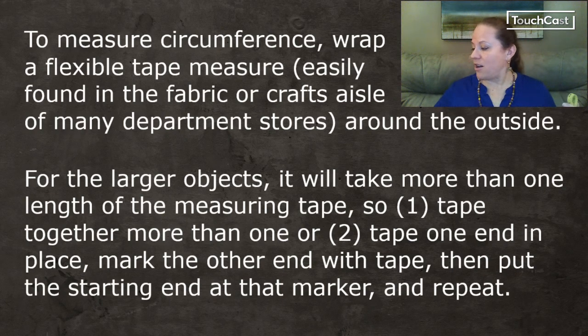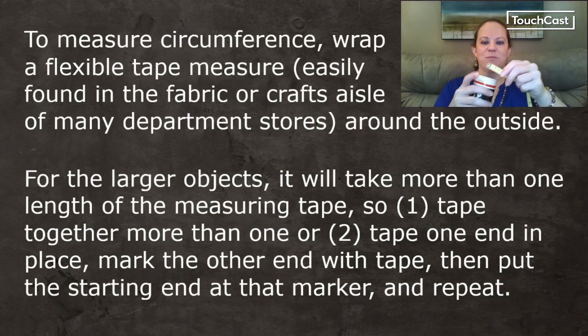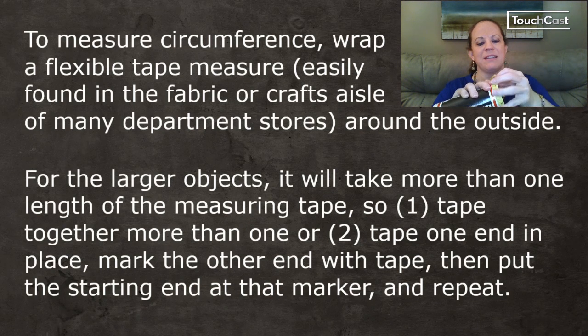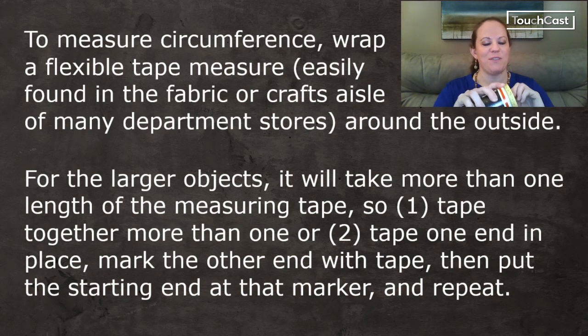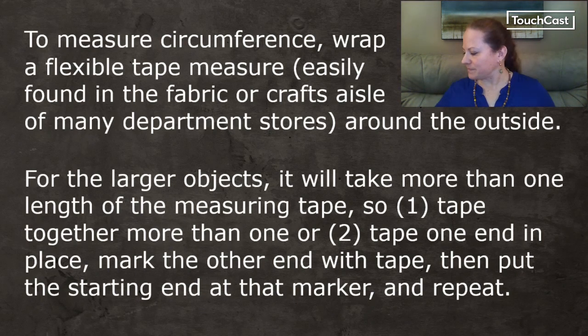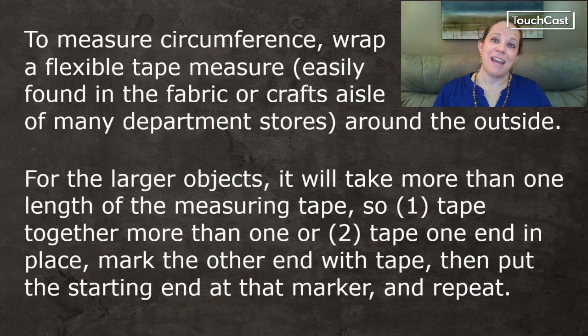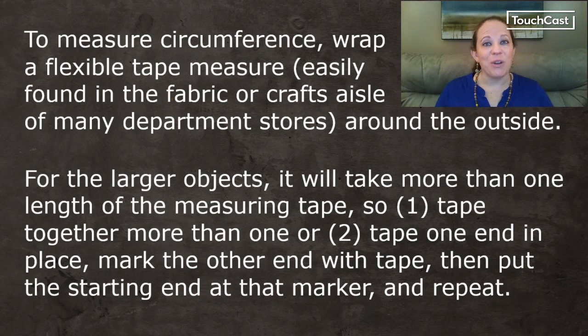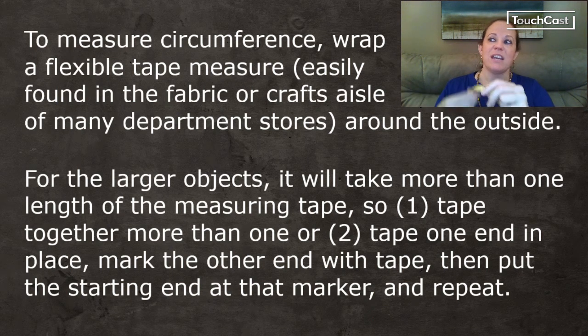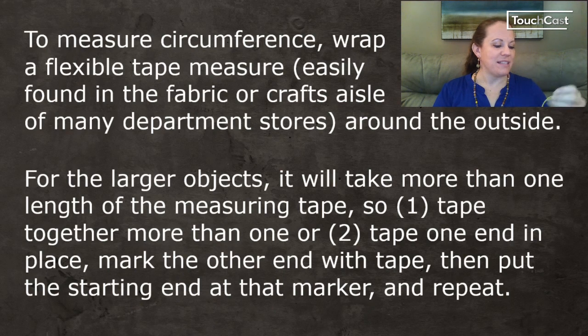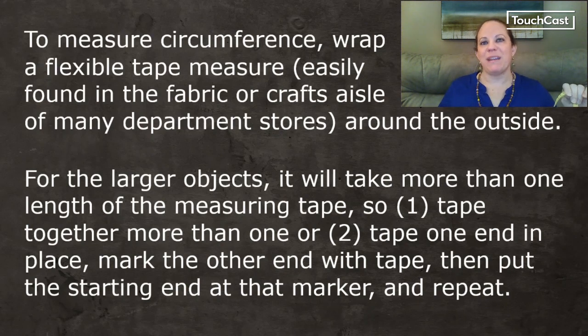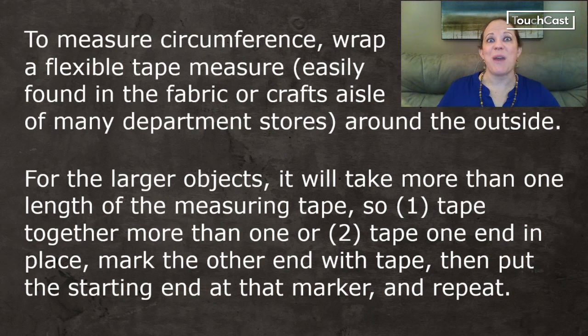And so to measure our circumference, we can pretty easily wrap our measuring tape just around the outside of the object. And of course, since this is a scientific experiment, we should really use the metric system. So we just wrap around the outside. For the larger objects, it's going to take more than one tape to get all the way around. So you can either tape multiple measuring tapes together, or you can tape one end in place, take the tape as far around as it's going to go, and mark where the end of the tape is, the final measurement on the tape, and then untape the beginning end of the tape and place it at the end. Obviously, this is easier to do if you have multiple people, like you would in a science class lab. But I, of course, executed this by myself.